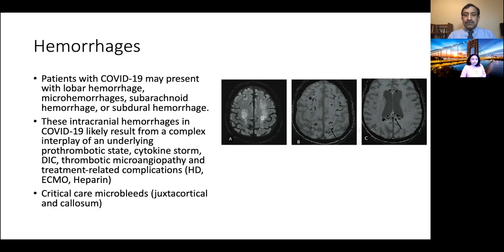The underlying pathophysiology of hemorrhages was either related to COVID coagulopathy, cytokine storm, DIC, thrombotic microangiopathy, or treatment-related complications.